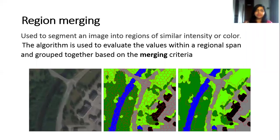So hello everyone, in this lecture I am explaining what is image region merging. Now image region merging is used for image segmentation. It is used to segment an image into regions of similar intensity or similar color.